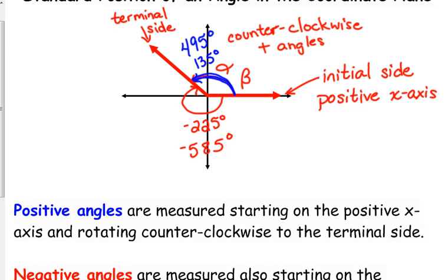It just means that we're going around, we're starting right here, and we're going all the way around, and then landing on our terminal side. So, we went all the way around 360 degrees, and then we went to 135, so that's where the 595 comes from. Same thing with the negative 585. We go all the way around clockwise, and then the 225 degrees. So, in total, we've rotated through 585 degrees. Thank you for asking the question.